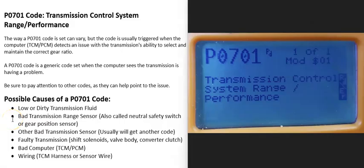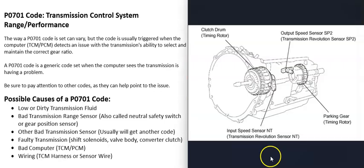Today I'm talking about a P0701 code — what it is and how you go about fixing it. The P0701 code is a transmission control system range/performance code.